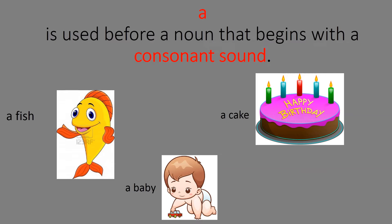'A' is used before a noun that begins with a consonant sound. That means when a word starts with a consonant, or more specifically a consonant sound, we use 'a' before such words. Children, take a look at these examples. The first picture is of a fish. The first letter of this word, 'f', is a consonant. So we use the article 'a' before this word and read it as 'a fish'.